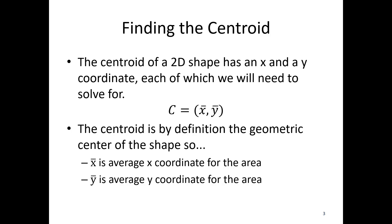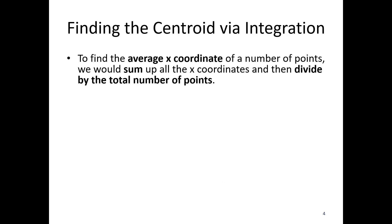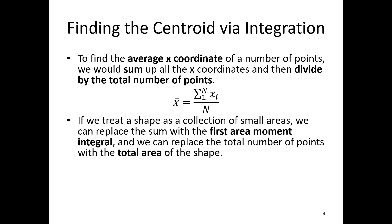For each piece, x-bar and y-bar, we have a calculation. To find the average x coordinate via integration: if we add a bunch of x coordinates of various points, we sum them up and divide by the total number of points — that's how averages work. If we treat the shape as a collection of small areas, we can replace that sum with the first area moment integral, integrating area times distance. We replace the total number of points with the total area of the shape. So x-bar equals the integral over the area of x times dA, divided by the overall area.